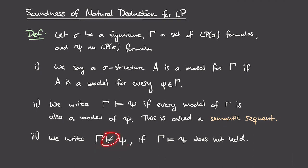We write that gamma does not model psi if this statement does not hold — that is, there exists some sigma structure A which is a model for gamma, meaning all formulas in gamma are true in that structure, but psi is not true in that sigma structure. Another way of thinking about this: there's an assignment of truth values to atomic propositions that serves as a counterexample, making everything in gamma true but not making psi true.